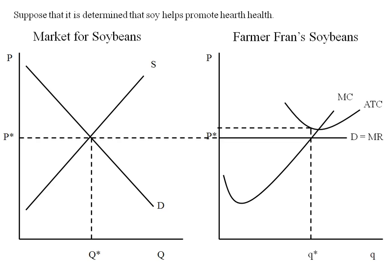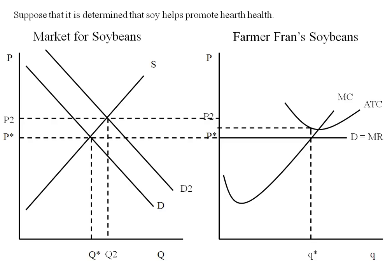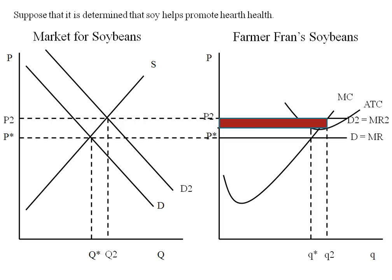Now let's suppose that it's determined that soy helps promote heart health. We'd expect that this would increase the market demand for soybeans, thereby changing the equilibrium price and quantity. We'll take our new equilibrium price over to the individual farmer's graph. This gives us a new demand and new marginal revenue curve. Because we have a new higher marginal revenue curve, we have a new intersection with marginal cost — a new Q star which we're going to call Q2. At Q2 we find the ATC and we find that we're actually earning a profit and selling a higher output.